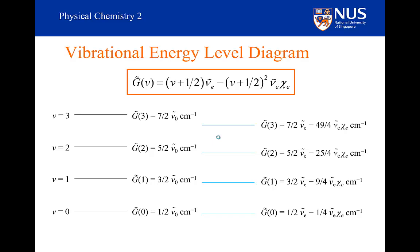This is the kind of result we expected: as we go to higher and higher vibrational energies, the levels get closer and closer together as we approach the dissociative limit. The fundamental frequency is the transition from v equals 0 to v equals 1. It works out to three halves nu sub e minus nine quarters nu sub e chi sub e, minus one half nu sub e minus one quarter nu sub e chi sub e, which equals nu sub e minus 2 nu sub e chi sub e. So nu sub 0 equals nu sub e minus 2 nu sub e chi sub e.